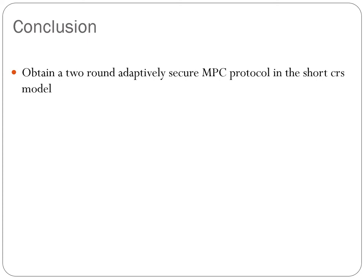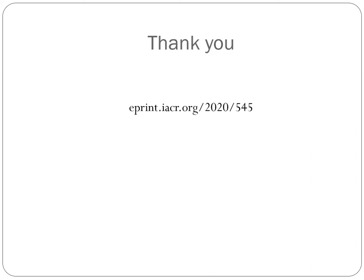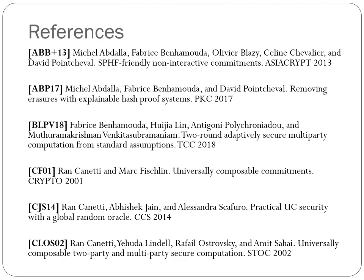To conclude, we have more results in the paper. We obtain a 2-round adaptively secure MPC protocol in the short CRS model. We also show that the first message — the receiver's message — of a 2-round receiver adaptively secure OT is itself an adaptively secure commitment scheme. Our work improves the efficiency of round optimal UC OTs and makes them practical under standard assumptions like DDH. It would be interesting to see if the efficiency can be further improved. Thank you, and here is our full version paper and references.